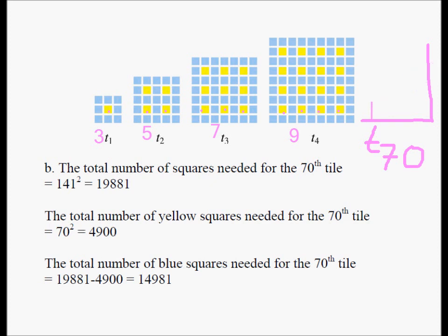So 141 blue squares on one side and 141 blue squares on the other side as well. If you multiply 141 by 141, you get 19,881 — that is the total number of squares needed, including both blue and yellow. From Part A, we know we need 4,900 yellow squares for T₇₀. If you subtract the total number of yellow squares from the total number of yellow plus blue squares, you get 19,881 minus 4,900, which equals 14,981 blue squares.